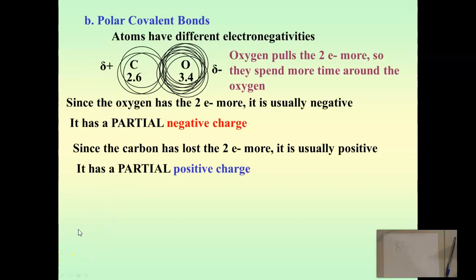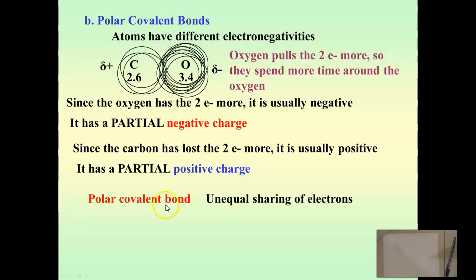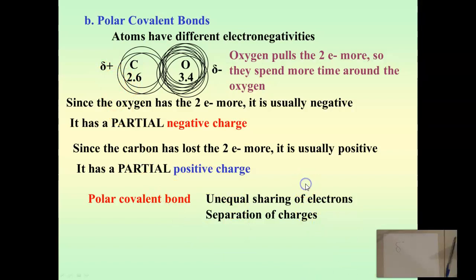So let's review. In a polar covalent bond, there is unequal sharing of electrons — the electrons spend more time around one atom than the other. Because of this, there's a separation of charge. The oxygen gets the electron more often so it's partially negative; the carbon has lost its electron more often so it's partially positive. The positive end is always the side with the lower electronegativity, and the negative end is always the side with the higher electronegativity.